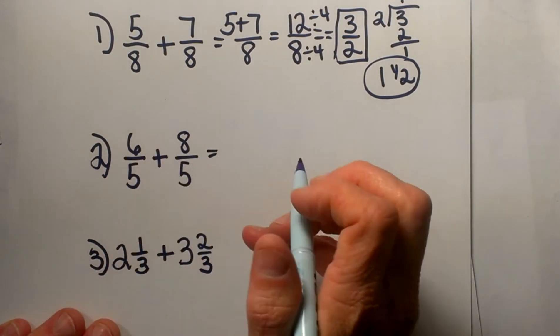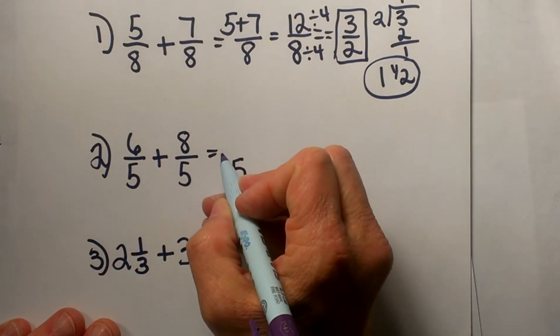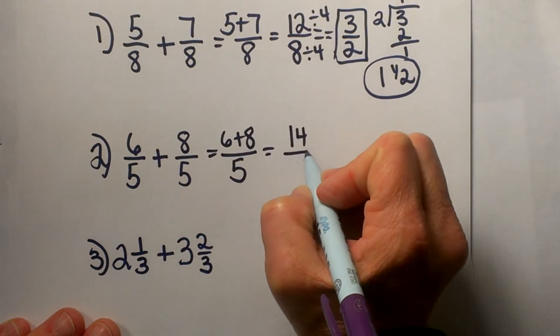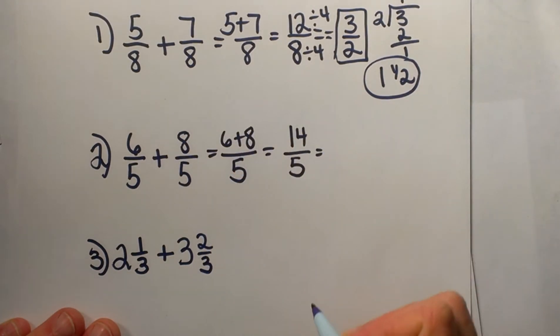So let's just add our numerators. We are going to take 8 plus 6 and add those together, so we're going to get 14 over 5 or 14/5.